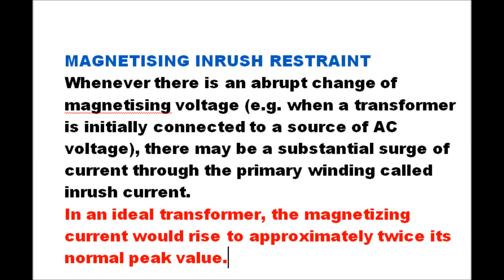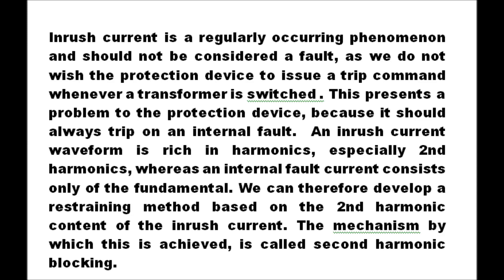Magnetizing inrush restraint: whenever there is an abrupt change of magnetizing voltage — for example, when a transformer is initially connected to an AC voltage source — there may be a substantial surge of inrush current through the primary winding. In an ideal transformer, the magnetizing current would rise to approximately twice its normal peak value. Inrush current is a regularly occurring phenomenon and should not be considered a fault. An inrush current waveform is rich in harmonics, especially the second harmonic, whereas an internal fault current consists of only the fundamental. A restraining method based on the second harmonic content of the inrush current is therefore developed, called second harmonic blocking.